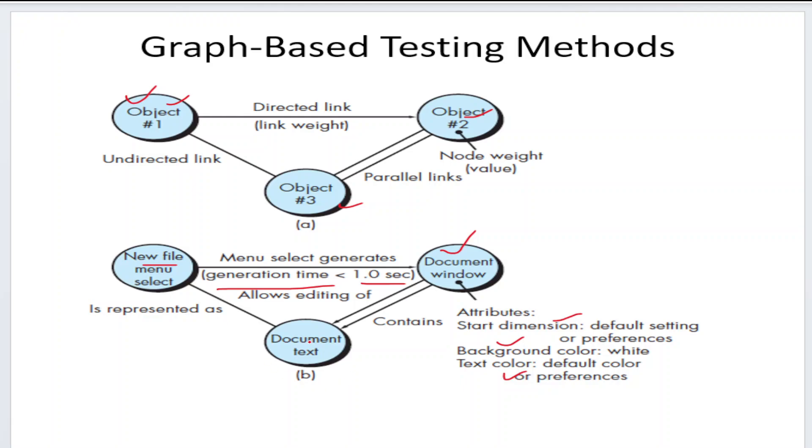It can be represented as text to document. This shows how we can do testing with the help of graph representations for your given objects. This is one type of testing method we can use in black box testing techniques.